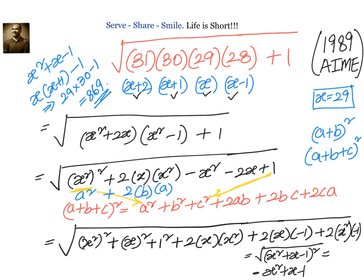The important point is that we rewrote minus x² as plus x² minus 2x² to match the (a+b+c)² formula and ensure a perfect square. This confirms our answer as 869. Now let us look at the other method.